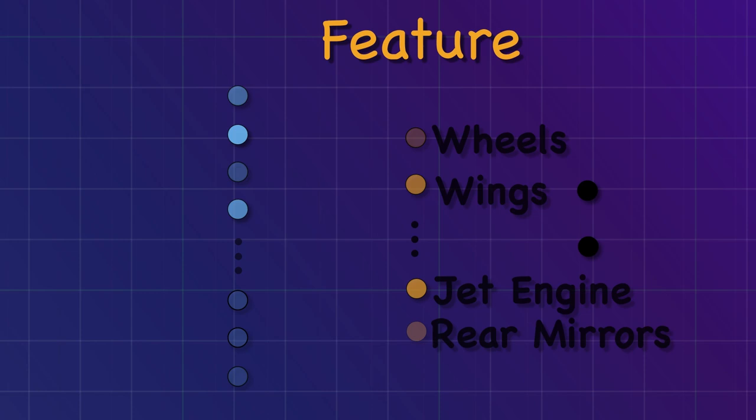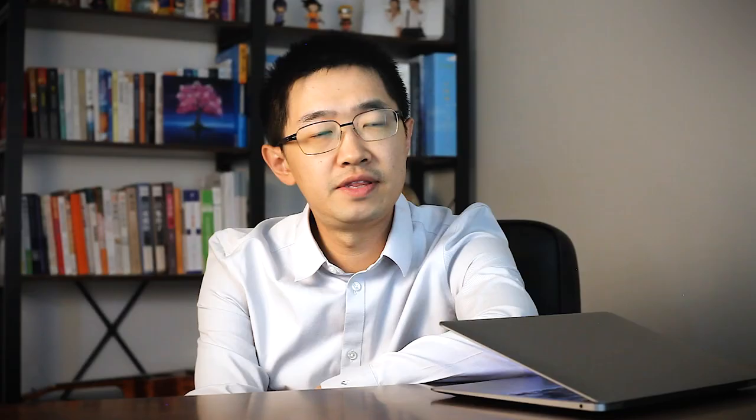When the artificial neural network sees the image of a car, features like wheels and rear mirrors will receive a high value, and a car is identified. This is how an artificial neural network works at a high level.